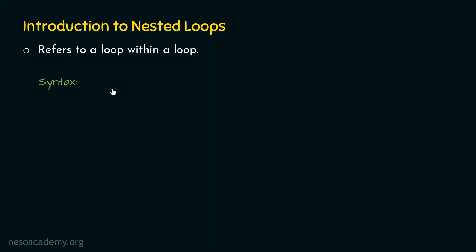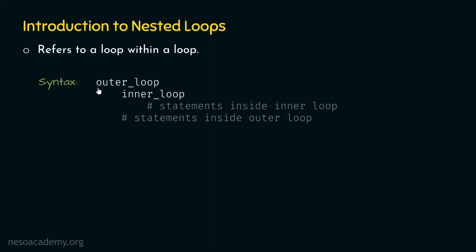This is how the Nested Loop structure looks. First, we write the outer loop statement. Then inside that, we write the inner loop statement, adding proper indentation. Within this inner loop, we write the statements we want, again with proper indentation — just one indentation level. We must not add two indentations for statements inside the outer loop. This is the entire structure of the Nested Loop.